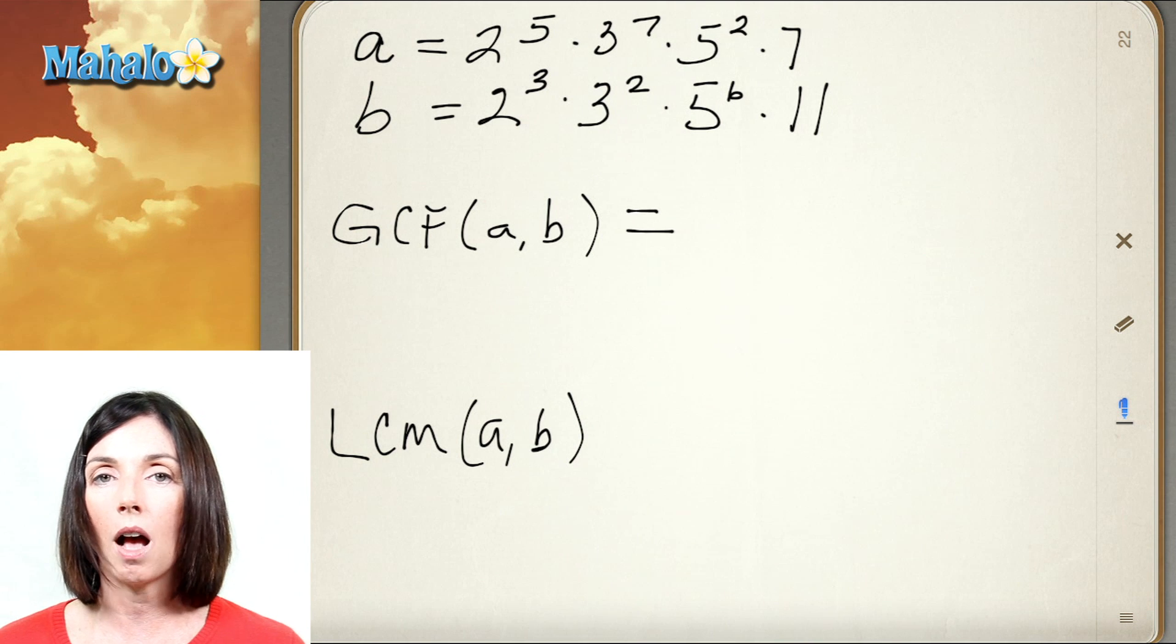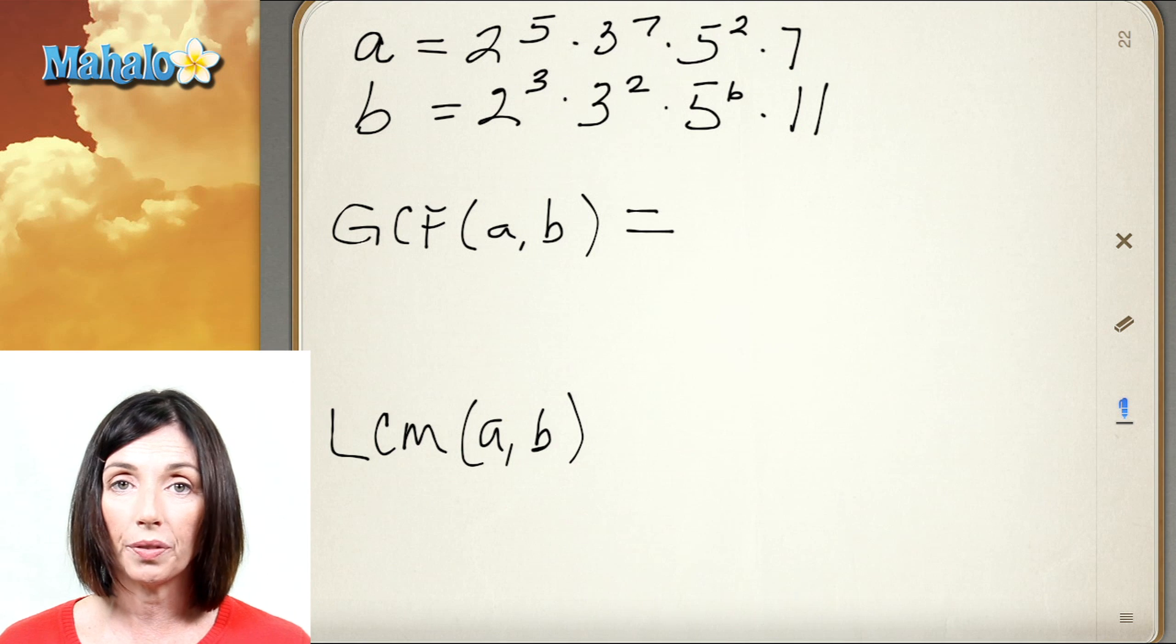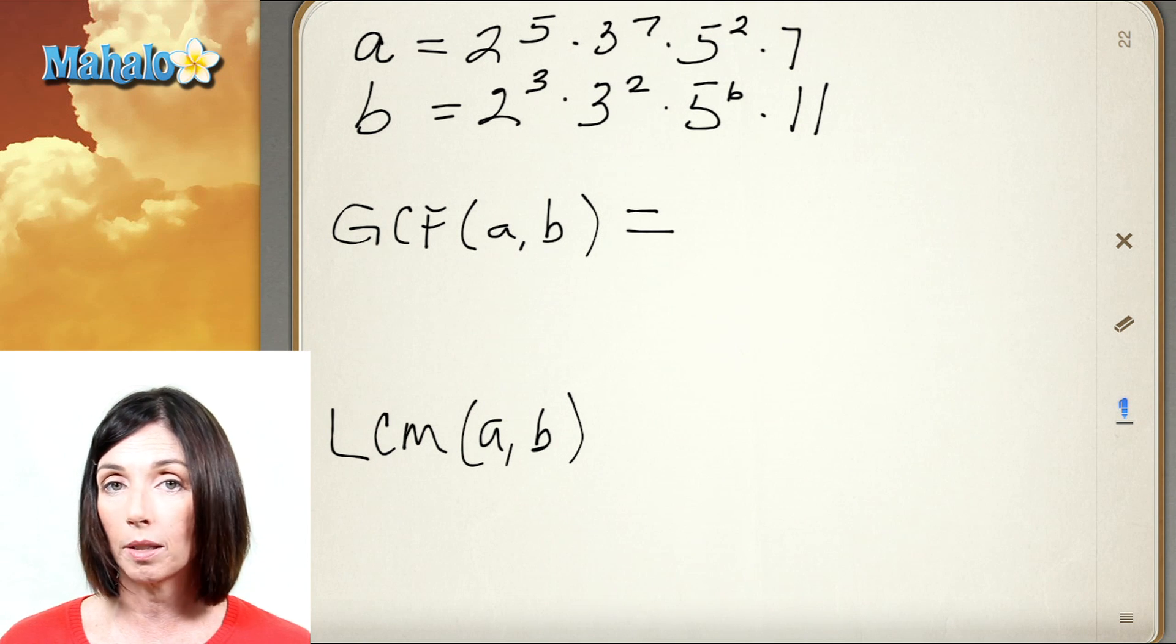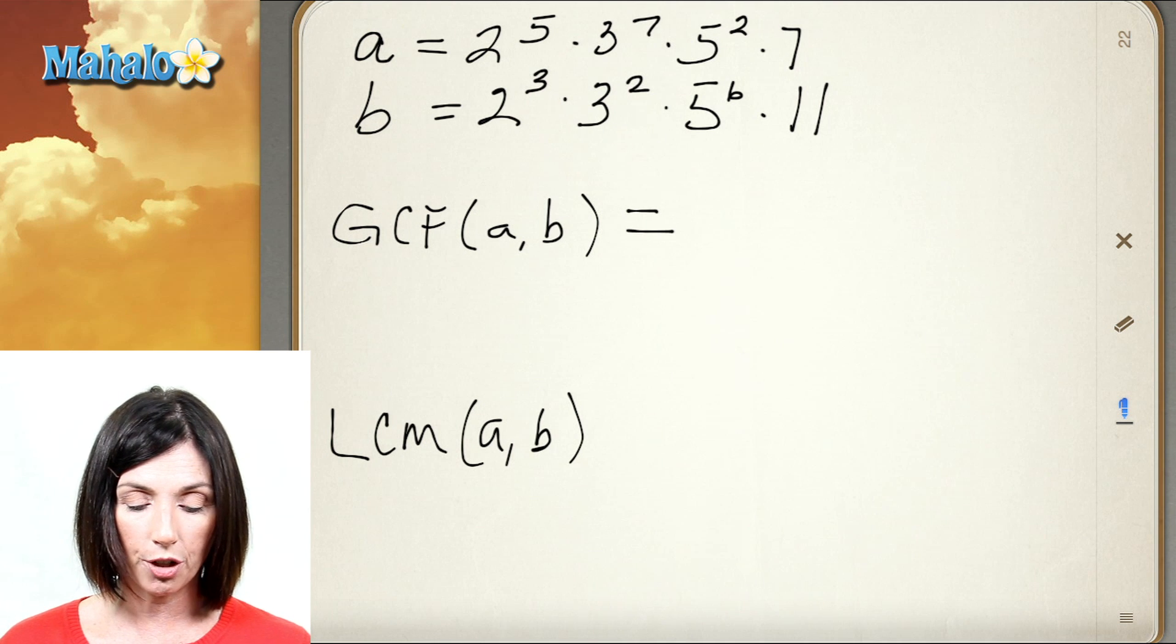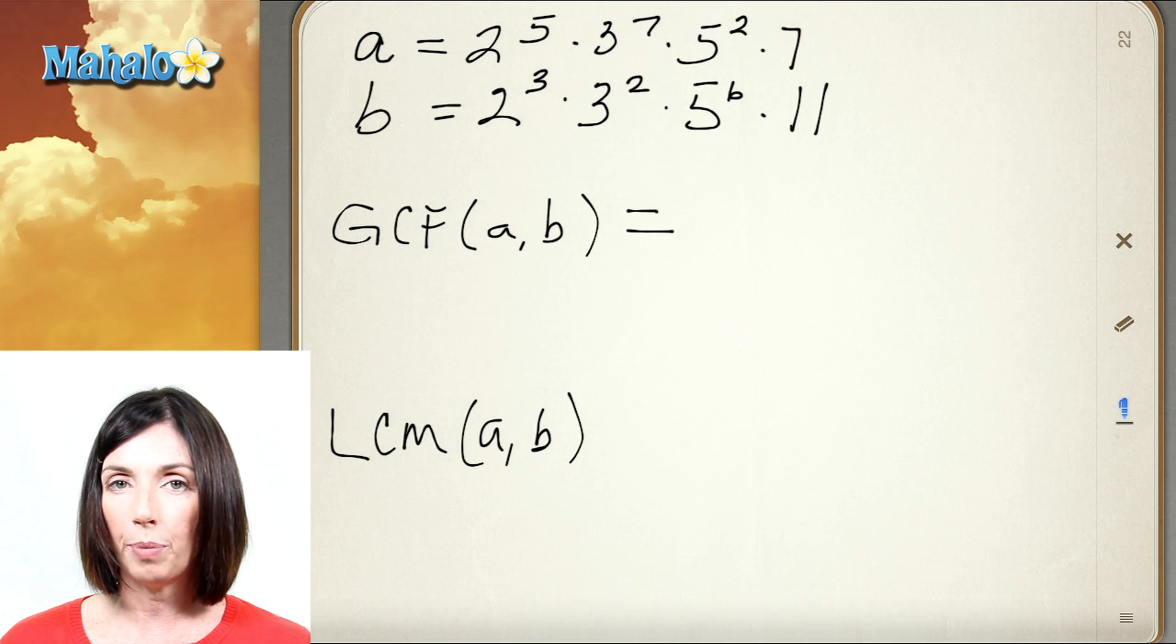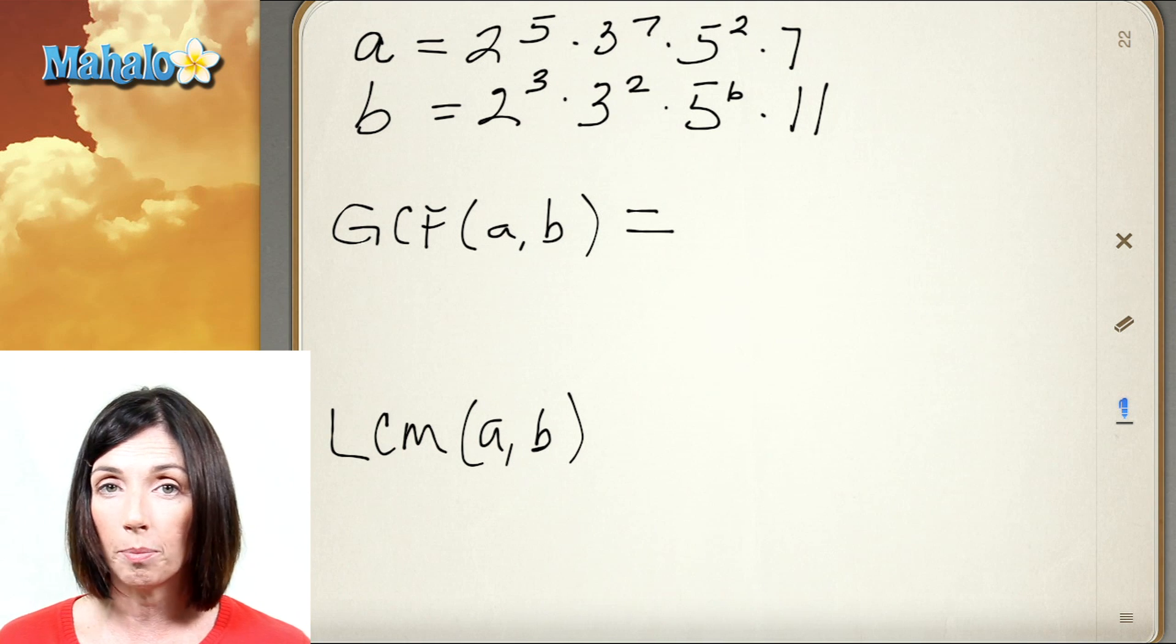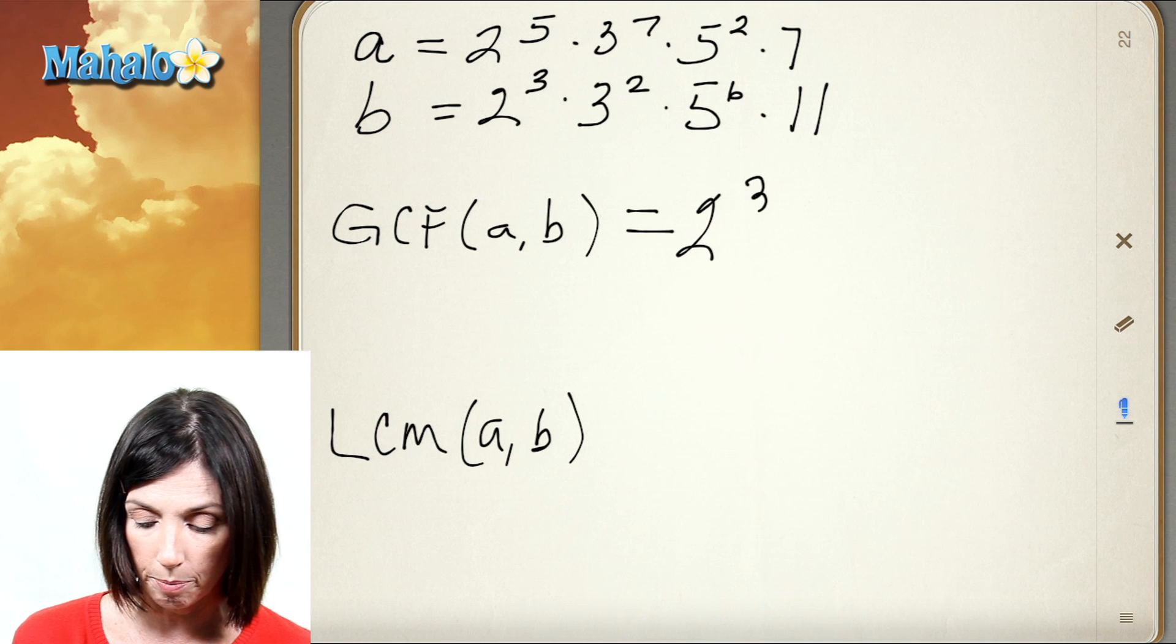So to find the greatest common factor, I only take what they have in common—what these two prime factorizations have in common. So let's start at the beginning. We have a 2 to the fifth in our A prime factorization and a 2 to the third in our B. So that means I have to take the 2 to the third. I have to take the smaller power because that will be included in the larger power. So I've got a 2 to the third in both.